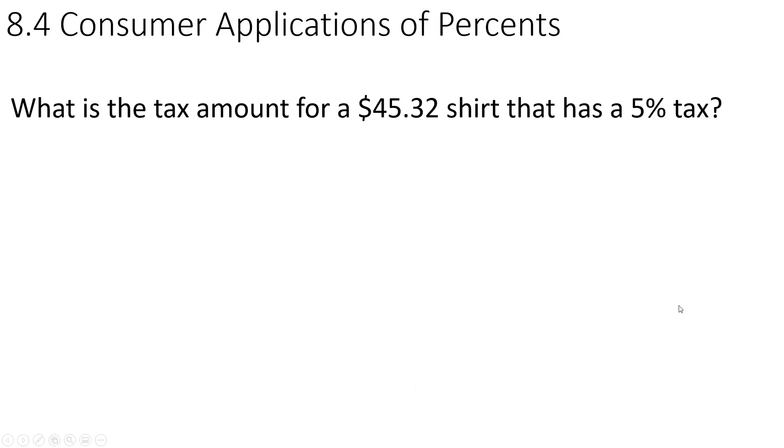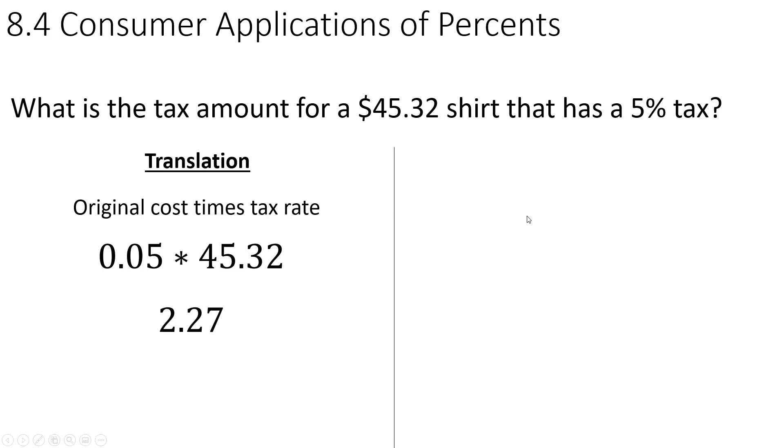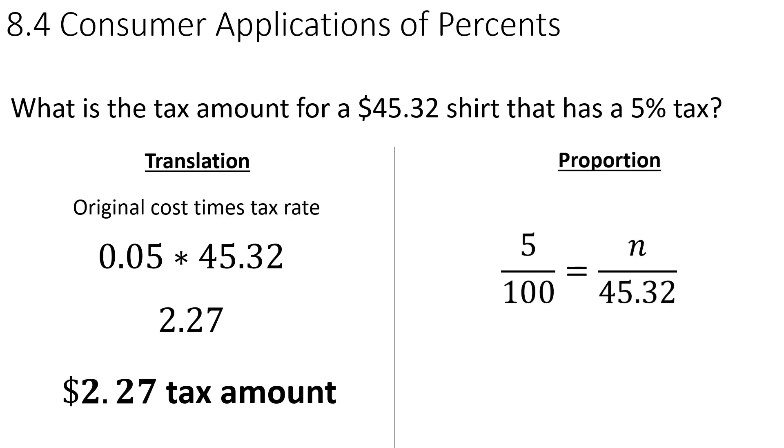What is the tax amount for a $45.32 shirt that has a 5% tax? Well, you can do a translation where you're saying original cost times the tax rate. 5% of 45.32 gives you 2.27. Or you could use a proportion and you could say 5% is 5 out of 100 and then something out of 45.32. You could do the 45.32 times 5 divided by 100 and that will give you 2.27 also. Moving on.